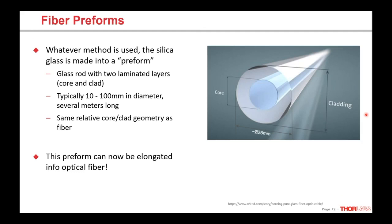Whatever method is used, the end product is what we call a preform — a large piece of glass with the core-clad structure, basically a giant version of the fiber. It's very large in diameter — something like 25 mm, 50 mm, and up — and can be meters long, so quite heavy. But it has that same waveguide design as the fiber with the core and cladding in the same proportions, and this is what we'll take and elongate into optical fiber.